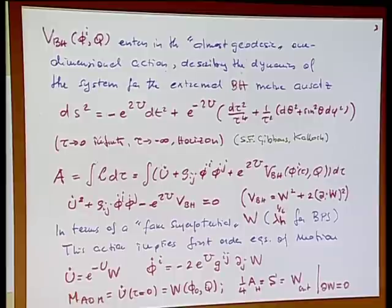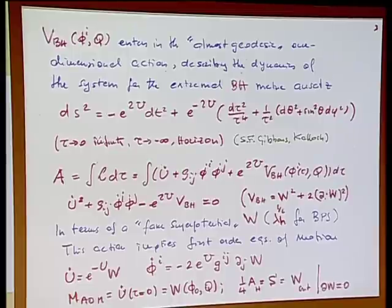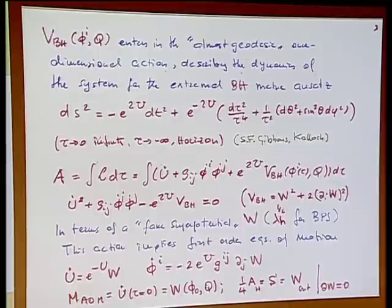And this is precisely the case of N equals 8 supergravity. In N equals 8 supergravity, different groups have shown that there is this W which makes the first order equations of motion for black hole backgrounds. So in some sense N equals 8 supergravity also at the level of description of black holes has some hidden symmetries which allow this simple description of the black hole background.